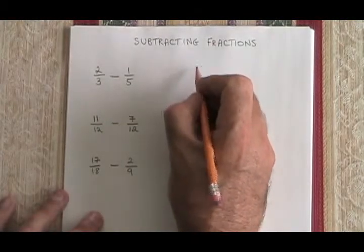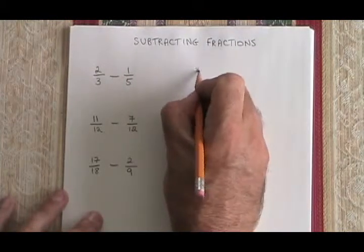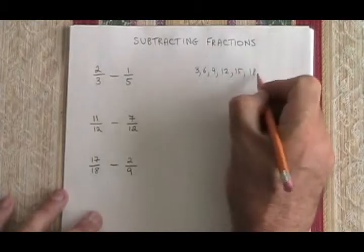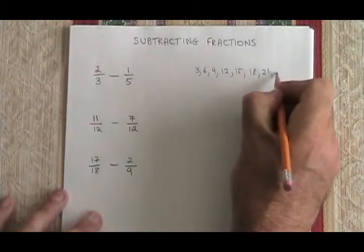I'm going to draw them here. The multiples of 3 are 3, 6, 9, 12, 15, 18, 21, and it keeps going.